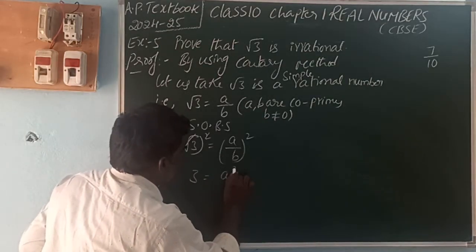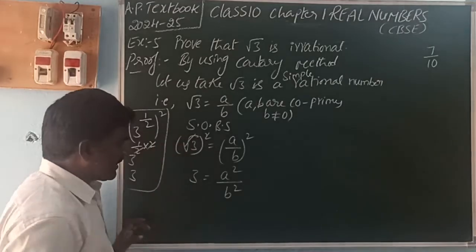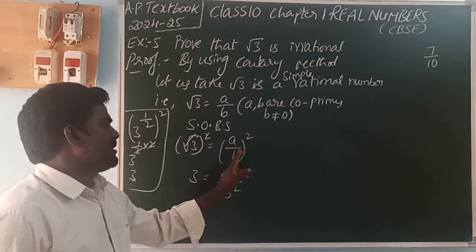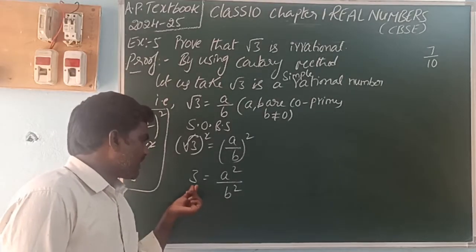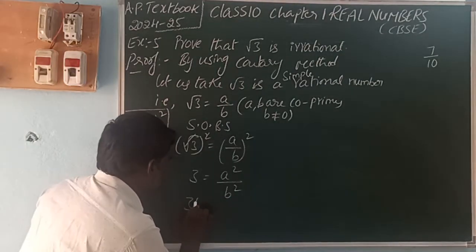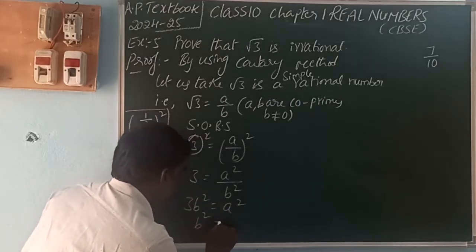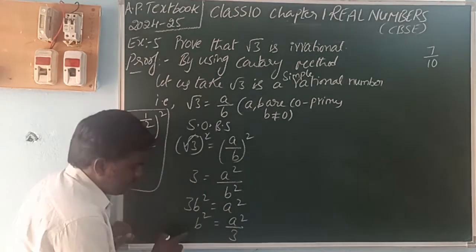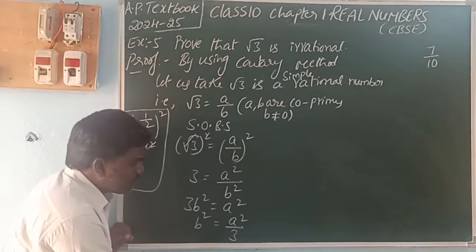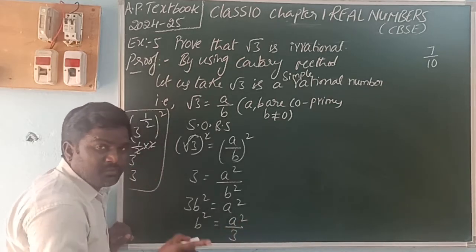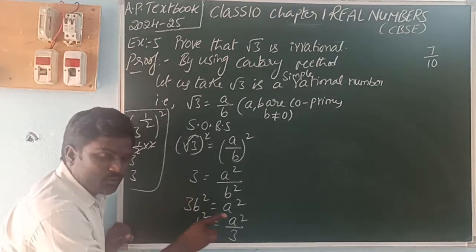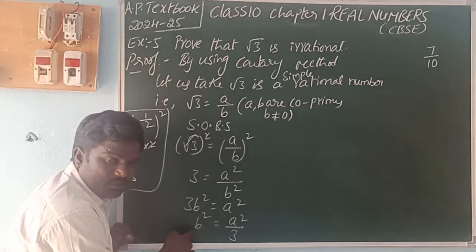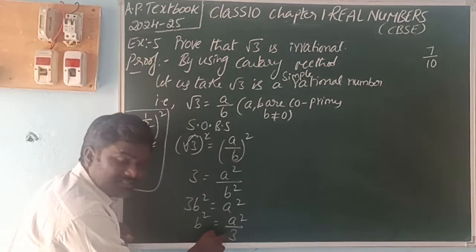On the right-hand side, using the formula (x/y)^m = x^m / y^m, a by b whole squared becomes a squared by b squared. So we get 3 equals a squared by b squared. Rearranging, 3b squared equals a squared. Observing this equation, b squared equals a squared by 3 — meaning a squared is divisible by 3.